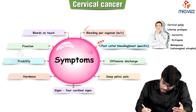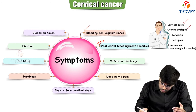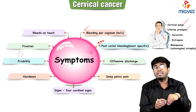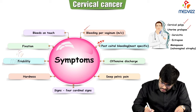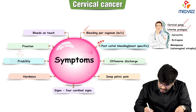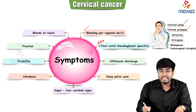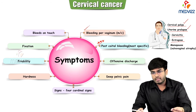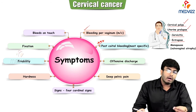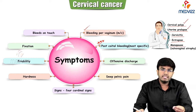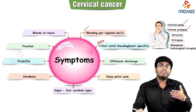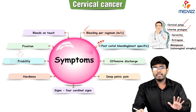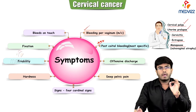Post-coital bleeding can also be seen in cervical polyps, uterine prolapse (where a decubitus ulcer can bleed), cervicitis due to gonorrhea infection, ectropion during pregnancy (outward projection of endocervix), and during menopause due to decreased estrogen causing vaginal atrophy. These are all differential diagnoses for post-coital bleeding.